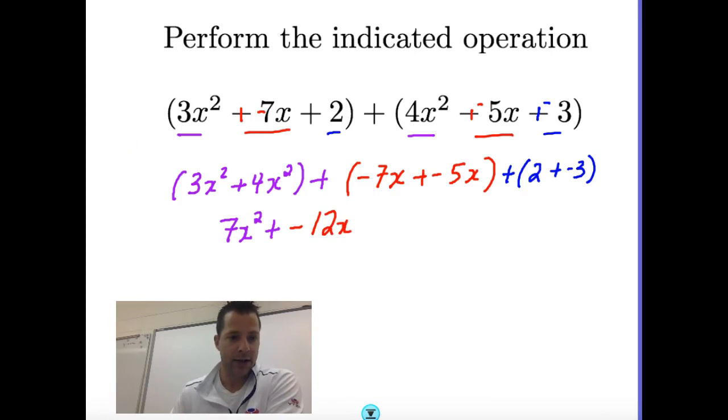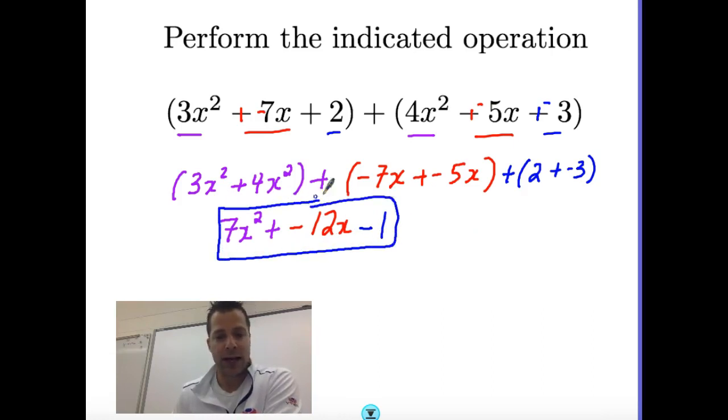And then our last two terms here are 2 plus negative 3, or 2 minus 3, which is negative 1, and that's how you add polynomials. You can only add them together if they have the same variable to the same power. So if you have any questions or comments, let me know. We'll see you next time.